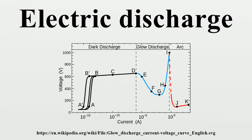Electric discharges include: brush discharge, dielectric barrier discharge, corona discharge, electric glow discharge, electric arc, electrostatic discharge, electric discharge in gases, leader, partial discharge, and streamer discharge.